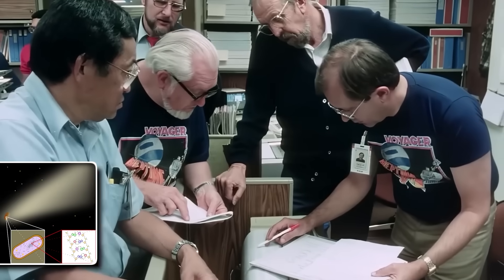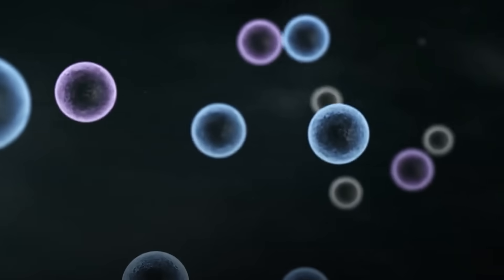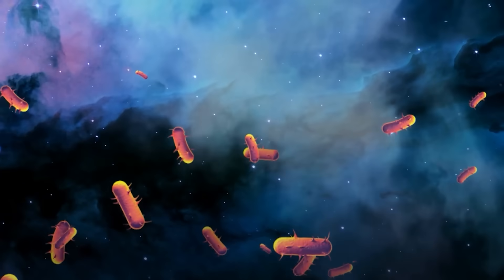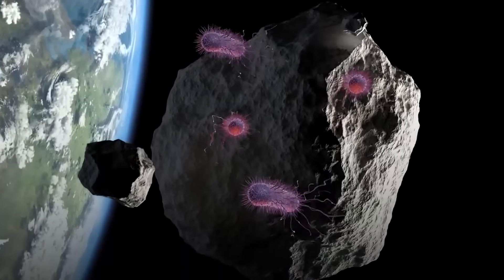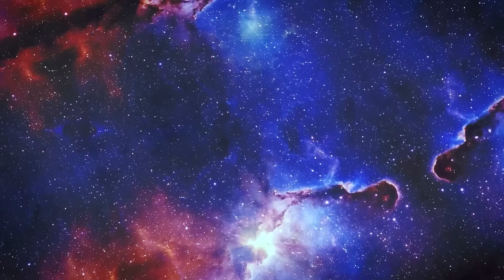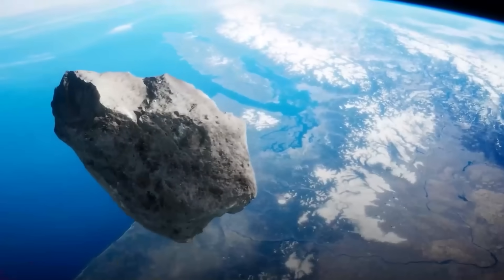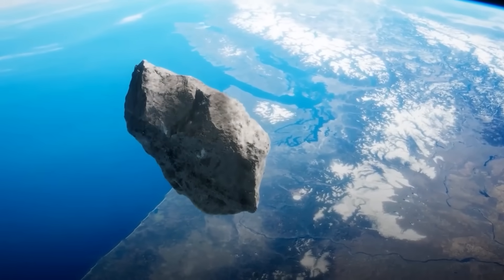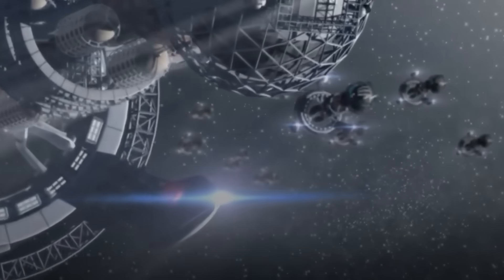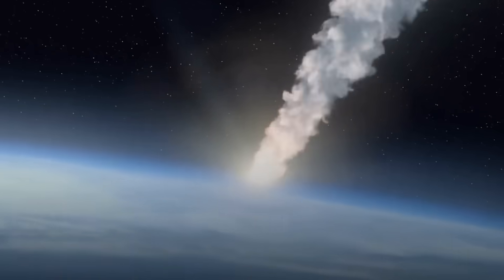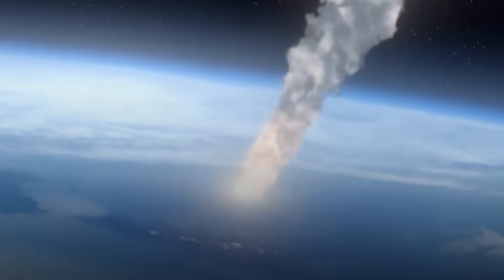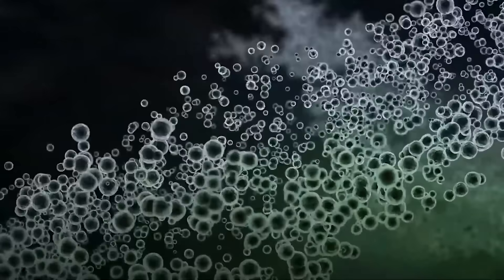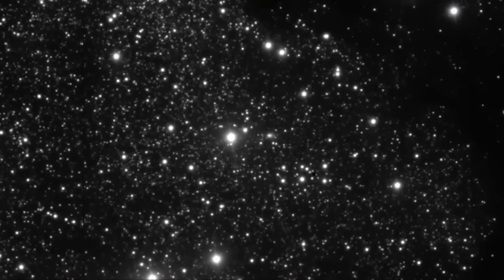The theory suggests 3I Atlas is a panspermia probe, a cosmic seed ship. You see, for decades, scientists have kicked around the idea of panspermia, the concept that life on Earth may have originated from microorganisms that drifted here from space, perhaps on a comet or asteroid. But this new theory takes it a giant leap forward. This wouldn't be accidental. It would be directed panspermia. An ancient, hyper-advanced civilization could have built fleets of these automated probes, cosmic gardeners designed to travel the galaxy and seed promising worlds with the building blocks of life.